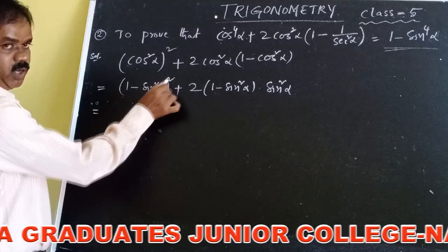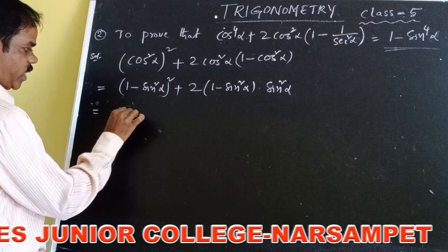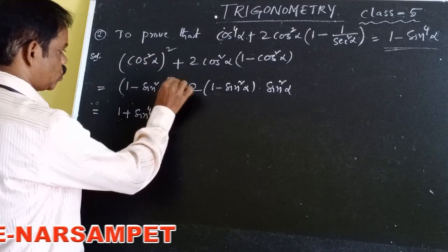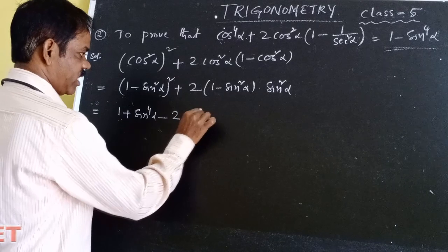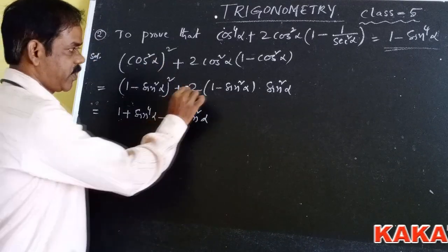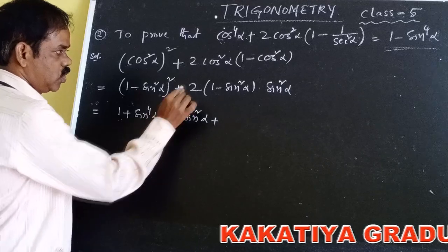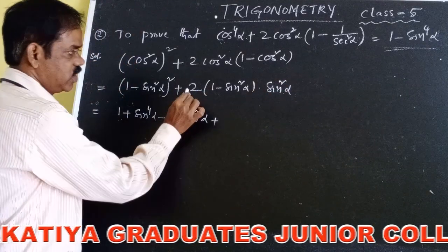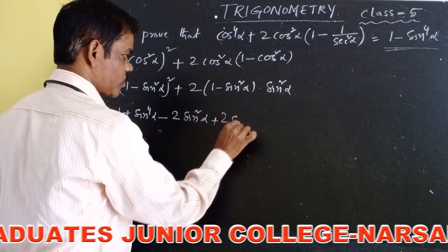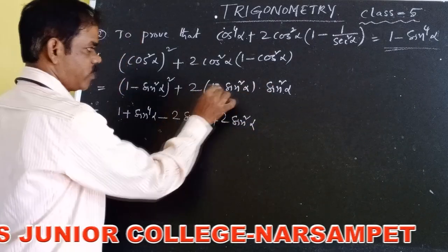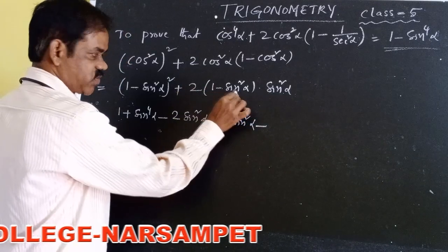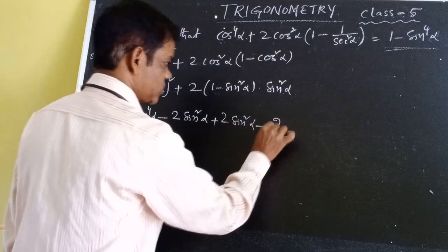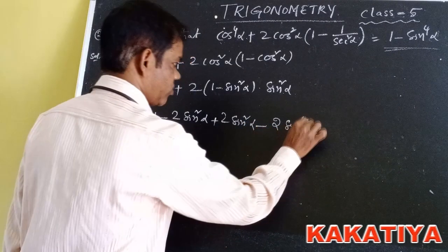The first part (1 - sin²α)² is in the form of (A - B)². Expanding: 1 + sin⁴α - 2sin²α. Then the second part: multiplying 2(1 - sin²α)·sin²α gives 2sin²α - 2sin⁴α.